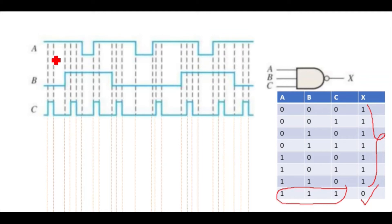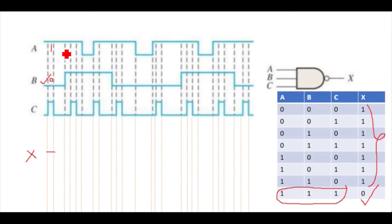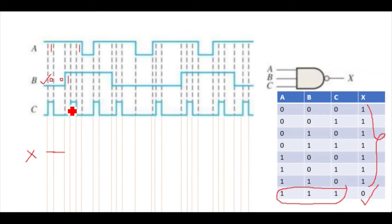Starting from here: A is one and B is zero. Since we already have a zero input, the output will be one. This is X we are drawing. Now A is one and B is zero till this value, so it will remain one. At this next point, A is already one but now C is zero, so till this point it is still one.